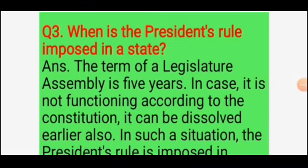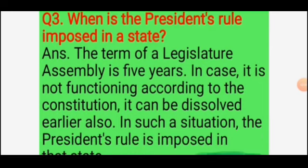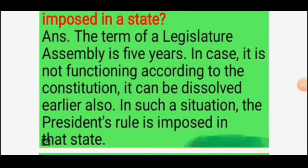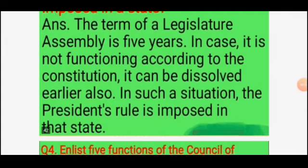Question three: when is President's Rule imposed in a state? The answer is: the term of a legislative assembly is five years. In case it is not functioning according to the constitution, it can be dissolved earlier also. In such a situation, the President's Rule is imposed in that state.